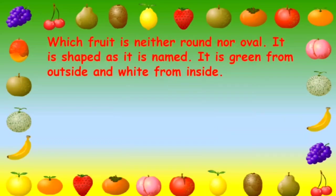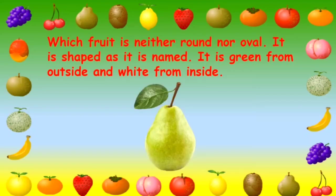Which fruit is neither round nor oval? It is shaped as it is named. It's green from outside and white from inside. Any guess? The answer is pear.